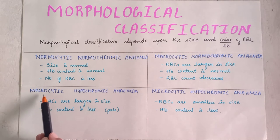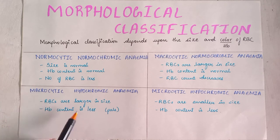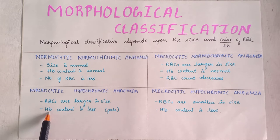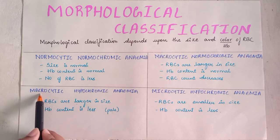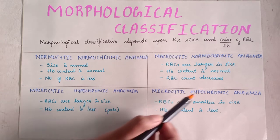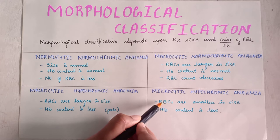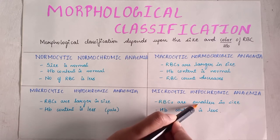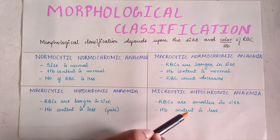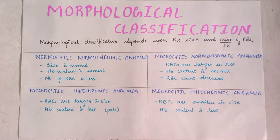Third: macrocytic hypochromic anemia. Macrocytic means RBCs are larger in size, whereas hypochromic — hypo means decreased — means decreased content of hemoglobin, which appears pale. Fourth: microcytic hypochromic anemia, where microcytic means smaller in size — RBCs are smaller — and hypochromic means hemoglobin content is less.